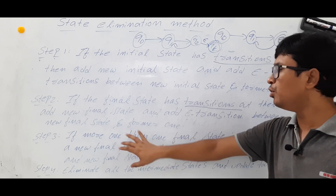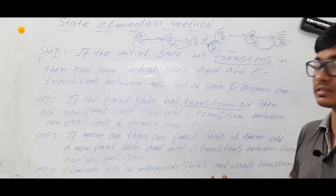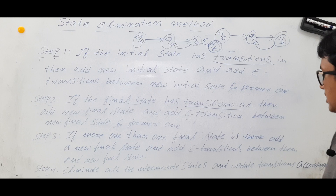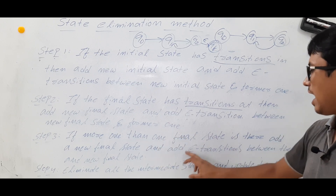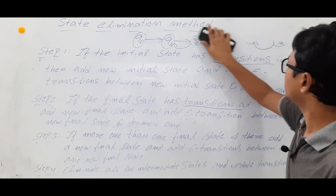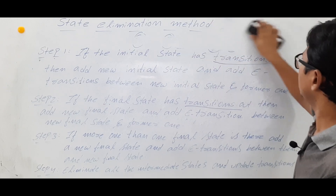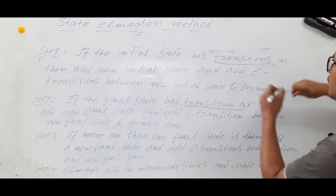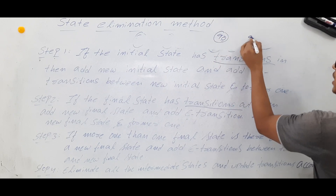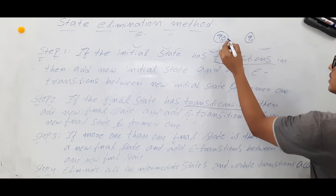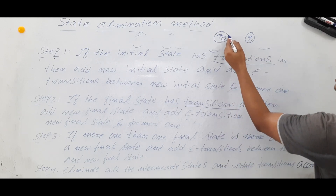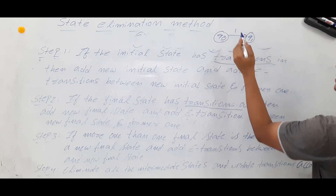If more than one final state is there, this is another case — the third case. If more than one final state is there, add a new final state and add epsilon transitions between them. Let me explain with an example: you have states q0 and q1.